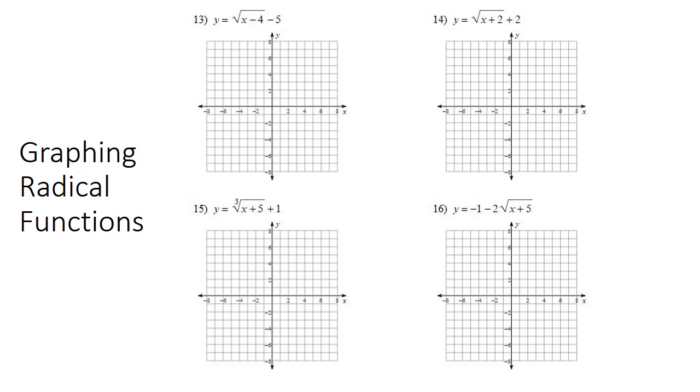For the first graphing problem, we're going to look at our transformations. This negative 5 makes it go down 5, and this negative 4 makes it go right 4. So our starting point is going to be down 5 from the origin, and to the right 4 from the origin. So that would be right there.